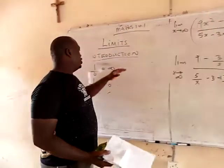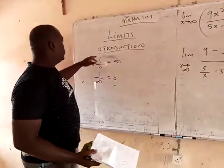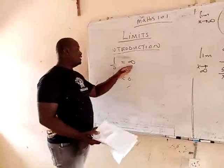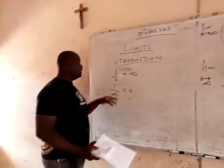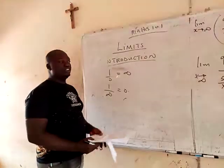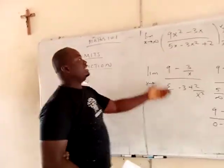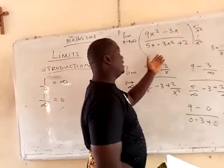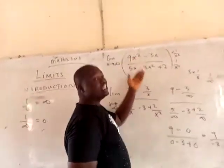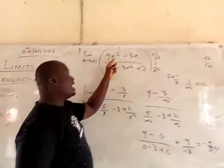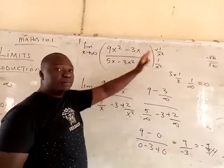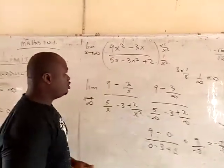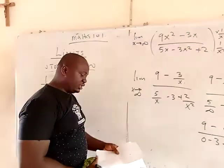Once you know under this course that 1 divided by 0 is infinity, and anything that infinity divides gives you zero, then when given a complex rational expression, the highest power of x is what you use to divide both top and bottom. Your answer will come out naturally.